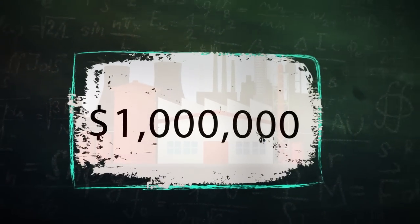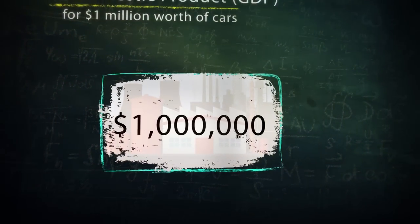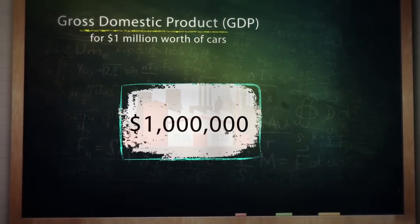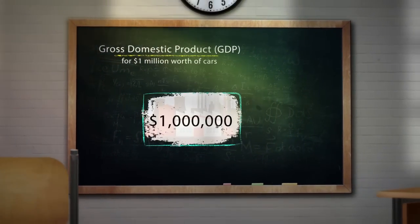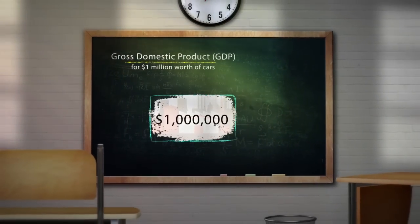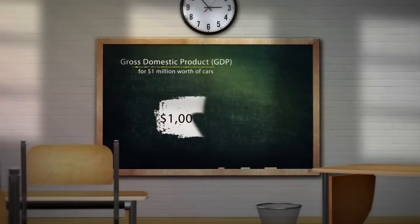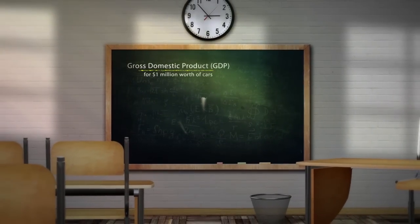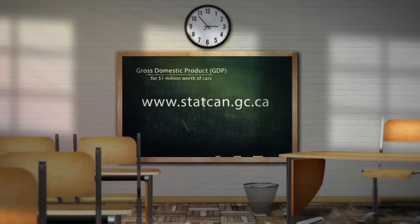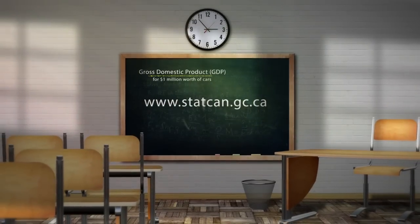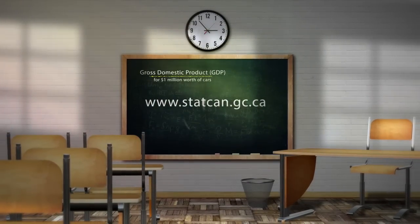Gross domestic product is the meter stick of the economy. Broadly, when it's increasing, the economy is said to be growing. If GDP is slowing down or negative, it can be an early sign of recession. That's why we take care to provide Canadians with access to accurate, up-to-date GDP data. You can learn more about GDP at www.statcan.gc.ca.